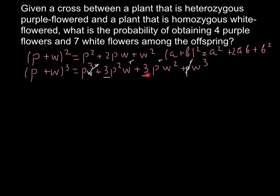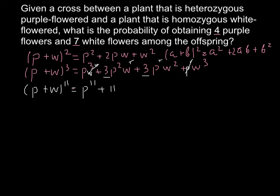Now let's jump to our actual formula. We have 4 purple and 7 white flowers, so 11 offspring total, meaning we expand (P + W)¹¹. The first term is P¹¹. The second term is 11P¹⁰W. For the third term, we calculate 11 × 10 ÷ (1 × 2) = 110 ÷ 2 = 55.